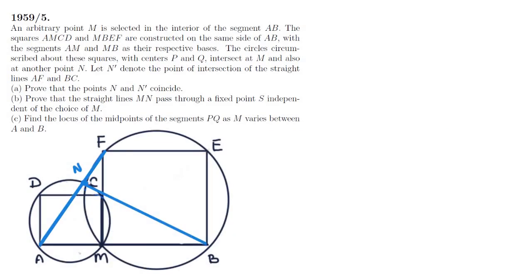Part B asks us to prove that the line MN passes through some fixed point S, irrespective of the choice of M. So, remember M can be anywhere along the line AB. Let's draw in the line MN like so, and to show what we need to show, we're going to make a few nifty observations.